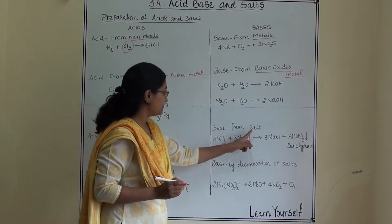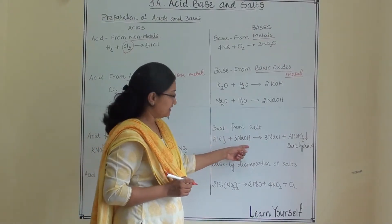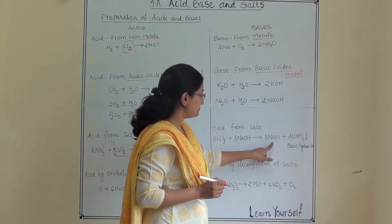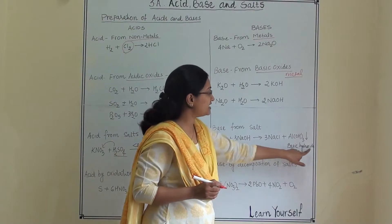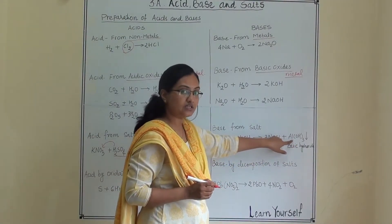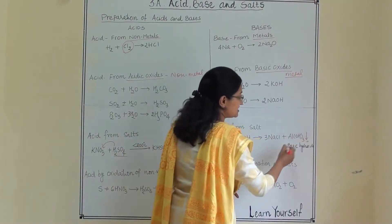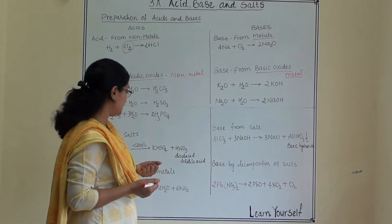Now base from salt. So aluminium chloride when react with alkali it gives NaCl salt and basic hydroxide. Because it is aluminium hydroxide, metal hydroxide and they are basic in nature. And it will precipitate out. This sign suggests us that it will precipitate out.